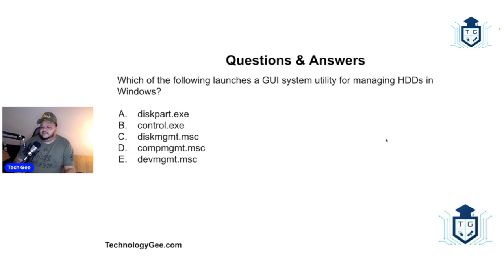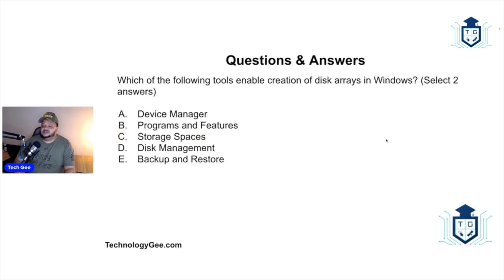Which of the following launches a GUI system utility for managing hard disk drives in Windows? The correct answer is Disk Management — you would use diskmgmt.msc to launch that graphical utility for managing hard drives in Windows.